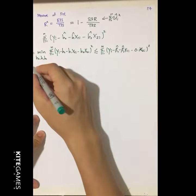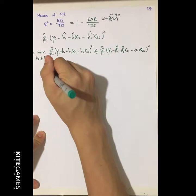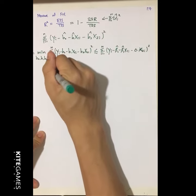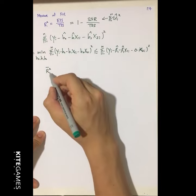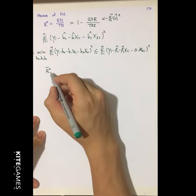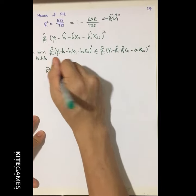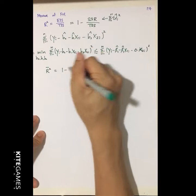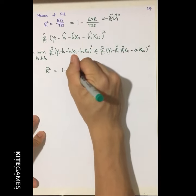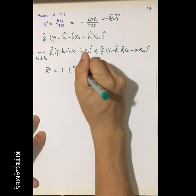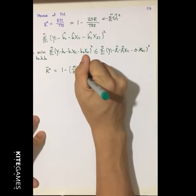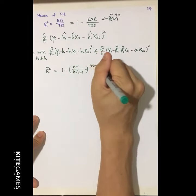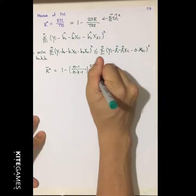In order to solve this problem, we have another measure called the adjusted R-square. The definition of adjusted R-square is 1 minus (n minus 1) divided by (n minus k minus 1), times SSR divided by TSS.